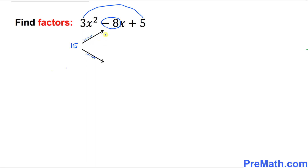The possible factors are going to be negative 3 and negative 5. As you can see, if you multiply these two factors we get positive 15, and if you add these two factors we get negative 8. In our next step we are going to look at this leading coefficient, which is 3. So whatever numbers we got, we're going to divide them by this leading coefficient 3. Simplifying gives us negative 1 and negative 5 over 3.